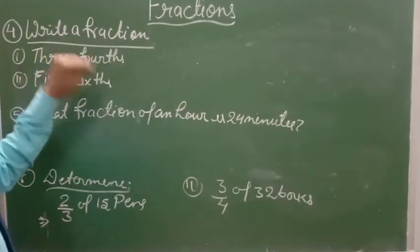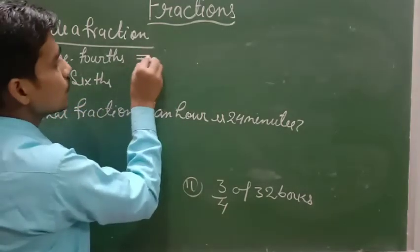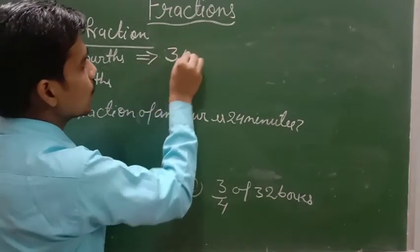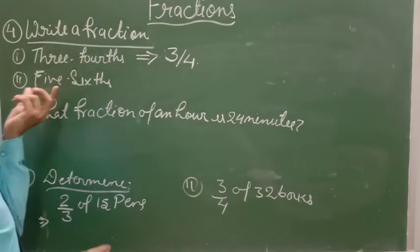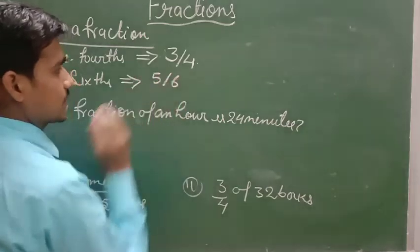See question number 4: Write a fraction. 3 fourth - 3 fourth means 3 by 4. And here 5 sixth.